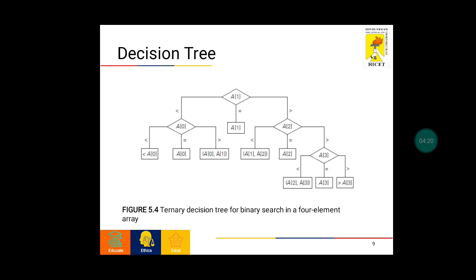This diagram shows the standard decision tree for binary search in a four element array. We compare the searching element with a[1]. If lesser, we take a[0] for comparison; if lesser we go beyond a[0], if equal we return a[0] as the searching element, if greater we take a[0] and a[1] for comparison. At the root, if equal to a[1] we return a[1]. If greater we take a[2]; if lesser we go between a[1] and a[2], if equal we return a[2]. If greater we take a[3]; if lesser we compare between a[2] and a[3], if equal we return a[3], if greater we go beyond a[3].